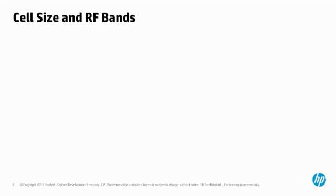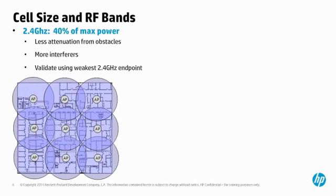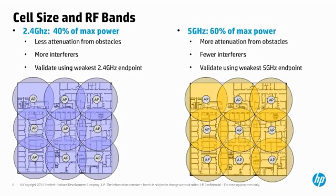Most APs include both a 2.4 and a 5 GHz radio, and the higher-frequency 5 GHz RF energy is more affected by obstacles. This means that the 5 GHz coverage area will tend to be smaller than the 2.4 GHz coverage. HP's smart design has helped in this regard — for most APs with integrated antennas, the 5 GHz antennas have a higher gain than the 2.4 GHz antennas. Also, the power of the 2.4 GHz radios can be adjusted to around 40% of max power, while the 5 GHz radios can be set to around 60% of max power, so the coverage patterns for both bands remain relatively consistent.